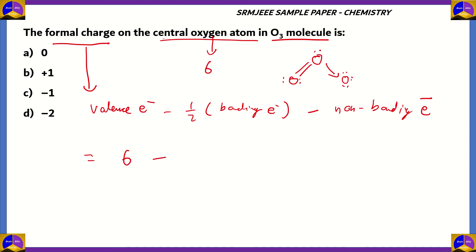The central oxygen is connected to the other oxygen atoms by a total of three bonds. In a coordinate bond, both electrons are provided by one atom, while in a covalent bond, one electron is contributed by each atom. Since one bond contains two electrons, the total number of bonding electrons is six. So half times six equals three.